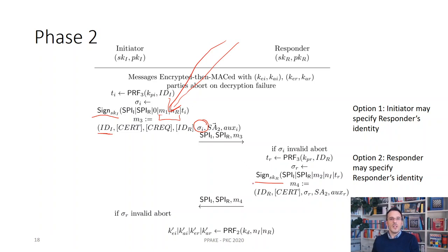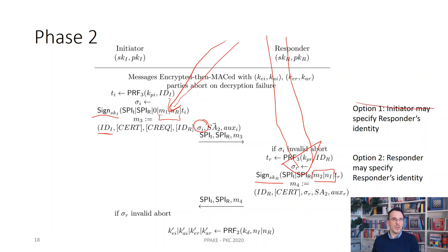Likewise, the responder also protects part of the messages from phase one. In this way, the two parties guarantee that there has been no active adversary. Now there are two protocol options, and this is where we use modes. In the first protocol option, the initiator may send information on the identity that should be used by the responder. In the second option — since this is optional — there is no such decision by the initiator, and the responder may decide on its own which identity to use.